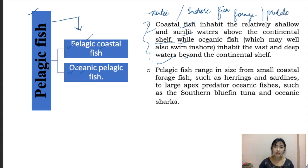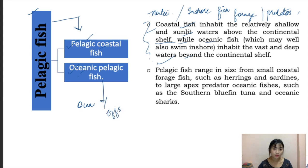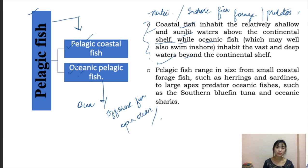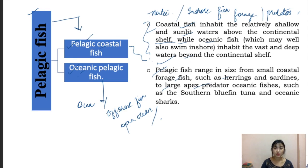Oceanic pelagic fishes are also known as offshore fish or open ocean fish. Coastal fishes range from forage fish like herrings and sardines to large apex predators. Oceanic fishes include species such as the southern bluefin tuna. Sardines, tunas, and similar species all fall under pelagic fishes.